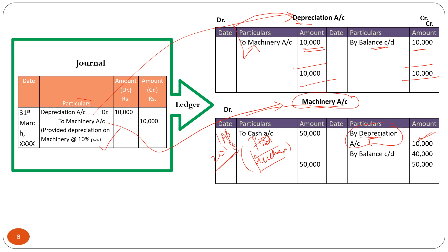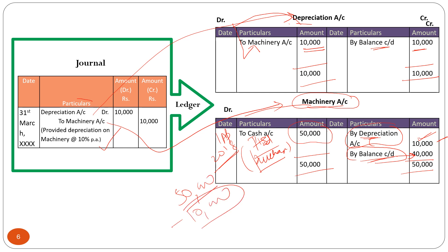Now we balance the Machinery Account. The debit side shows 50,000 and the credit side shows 10,000, so the debit side is greater. We write 50,000 on the total and the shortage is written as Balance c/d of 40,000. You purchased machinery worth rupees 50,000 and charged depreciation of rupees 10,000, so the remaining balance of the machine is 40,000 carried down — this c/d will become b/d in the next year.